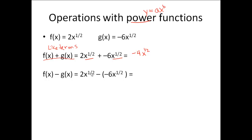With subtraction, I do basically the same thing. I take f of x, which is 2x to the 1 half, minus negative 6x to the 1 half. When I take minus this negative, it turns into plus a positive. So when I have two of these things and I add six more of those things, I end up with 8x to the 1 half. This is just like adding two tigers plus six tigers — I don't do anything to my label. It doesn't become tiger squared, so x to the 1 half just stays x to the 1 half.